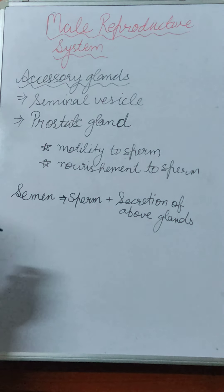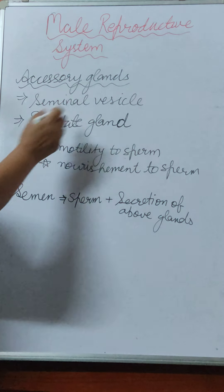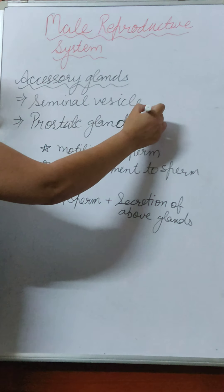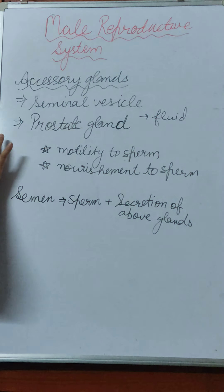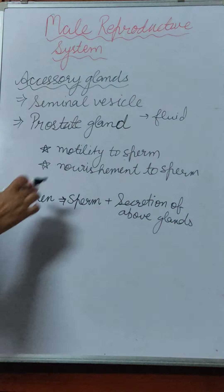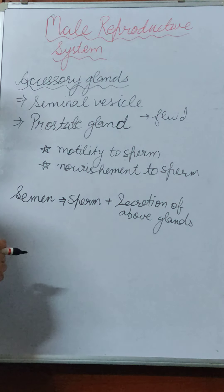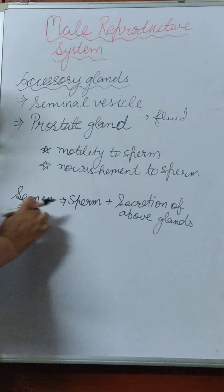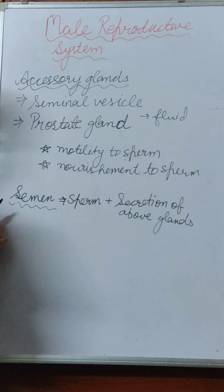Besides the main reproductive organs, there are glands that have an important role in reproduction. In males, there are two glands: the seminal vesicle and the prostate gland. Both glands release a fluid whose main functions are to provide motility to sperm so they can be transferred, and to provide nourishment to sperm. When this fluid and sperm combine together, they form semen, which the male ejaculates outside the body.